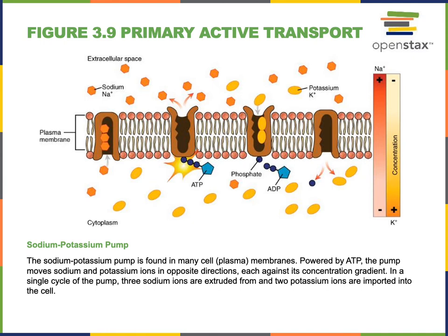Active transport is the movement of solutes across the plasma membrane, which requires the input of energy, usually in the form of ATP. In active transport, solutes move against their concentration gradients, leading to an accumulation of a solute on one side of the plasma membrane.